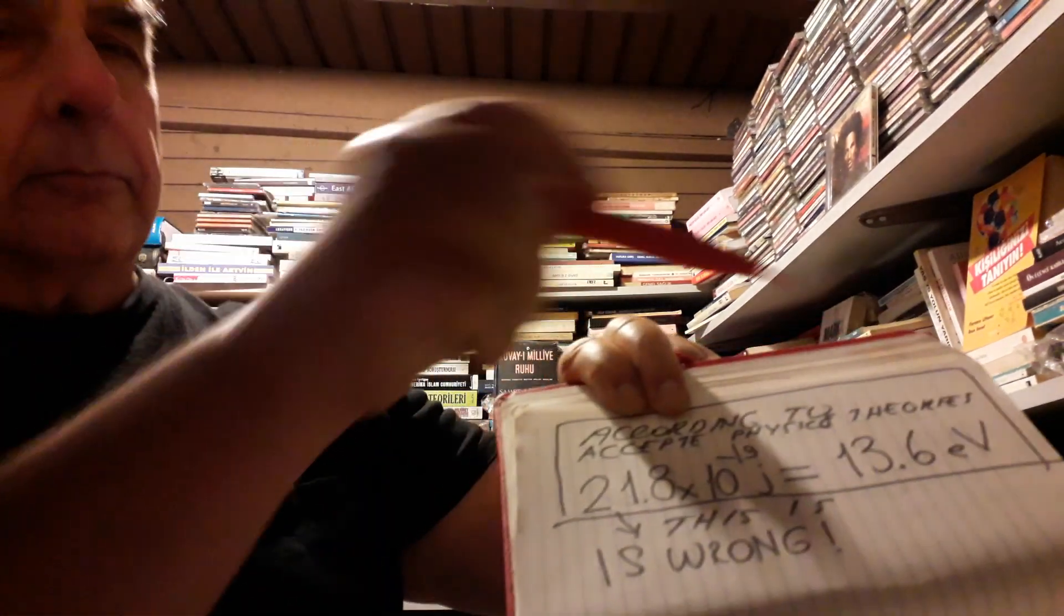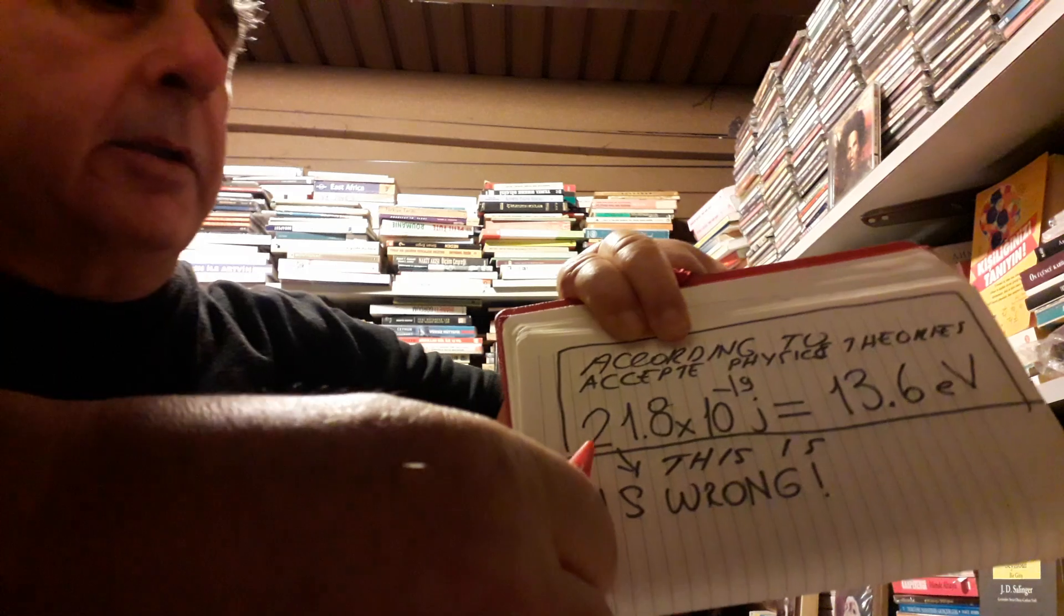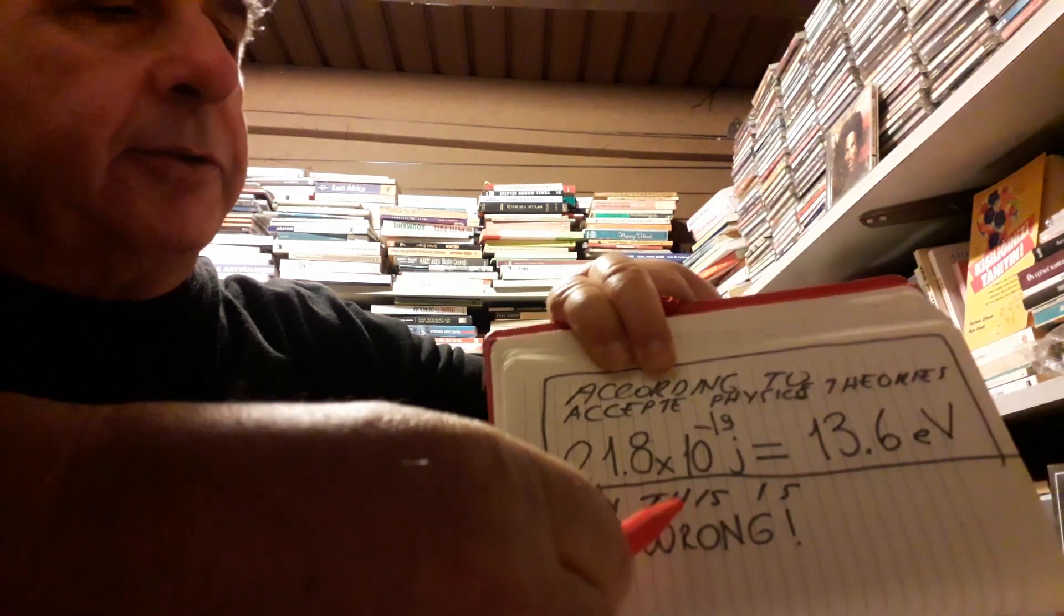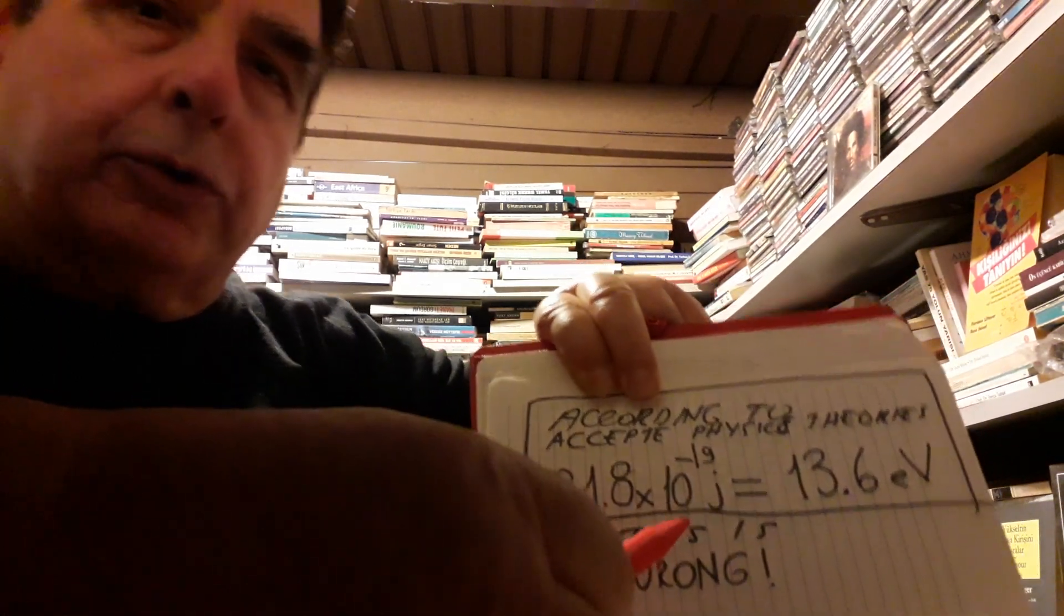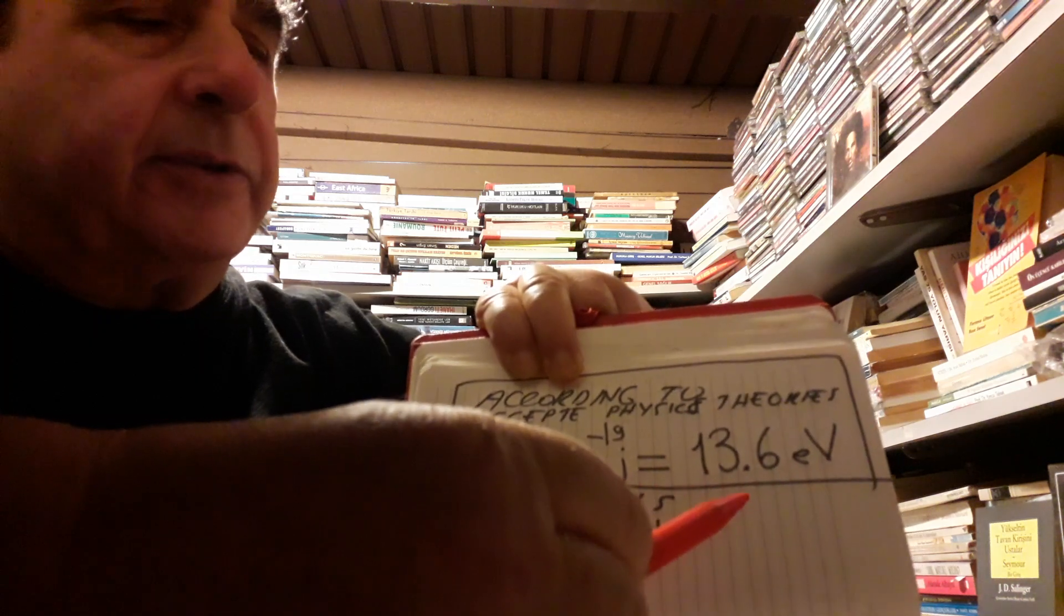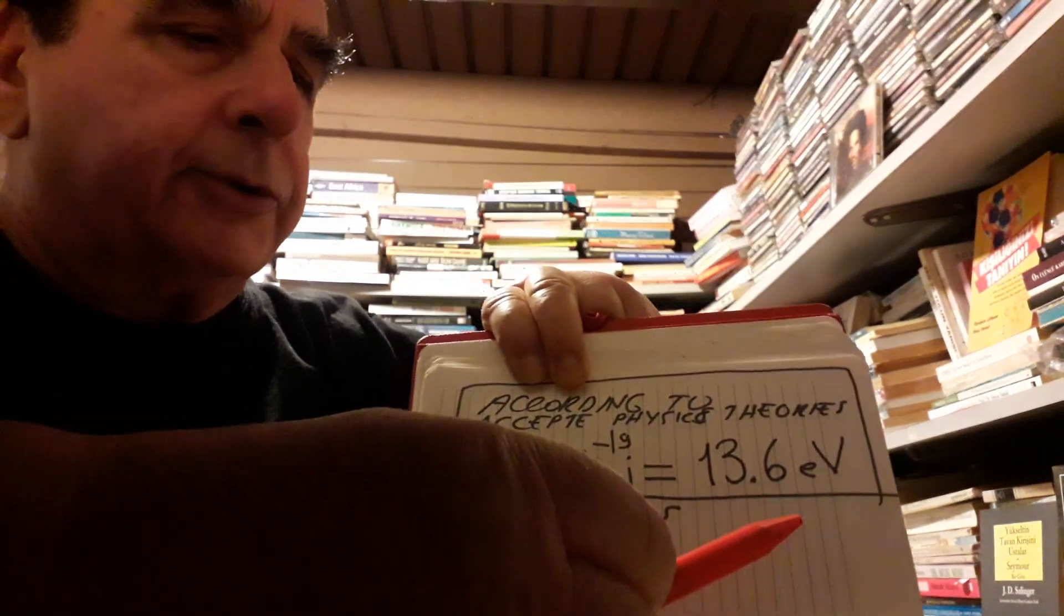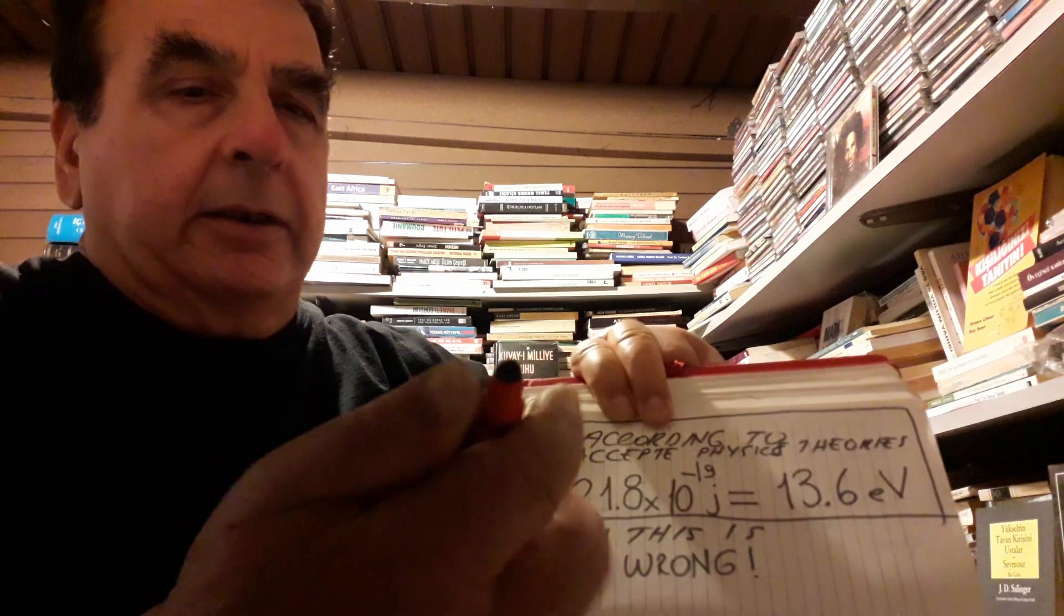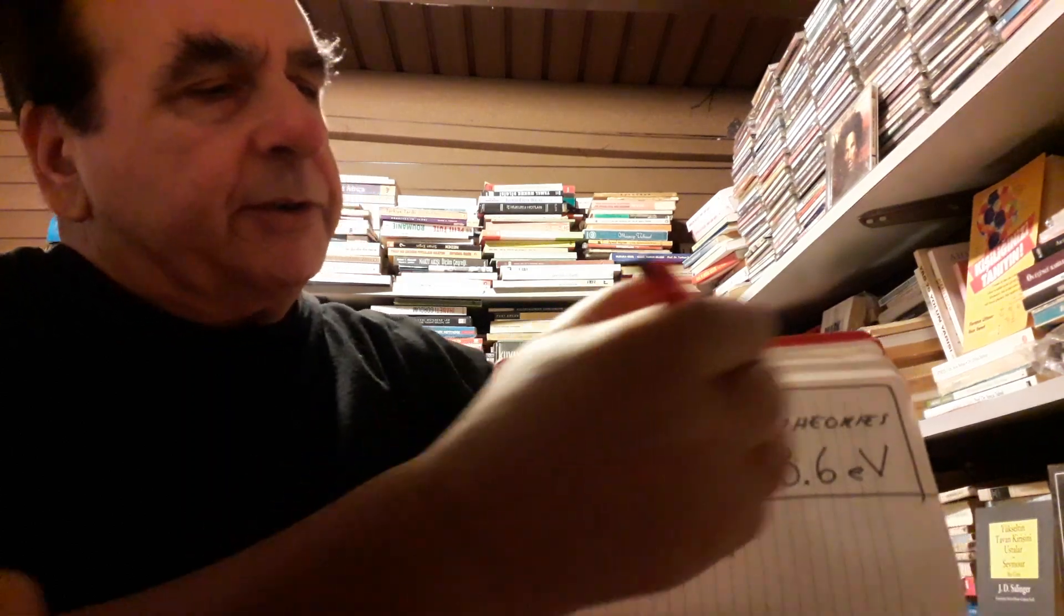According to accepted physics theories, 21.8×10^-19 joules equals 13.6 electron volts, and according to me, this is wrong.